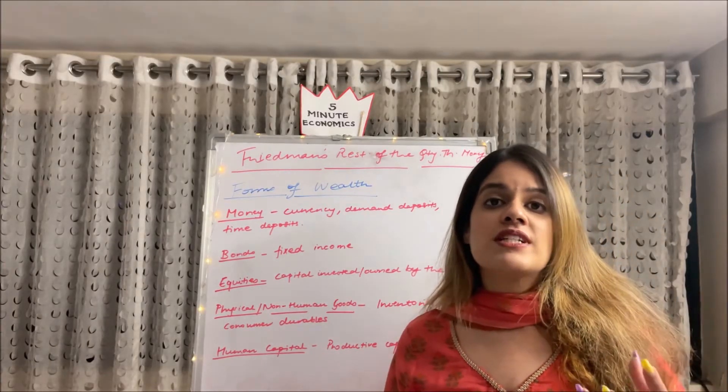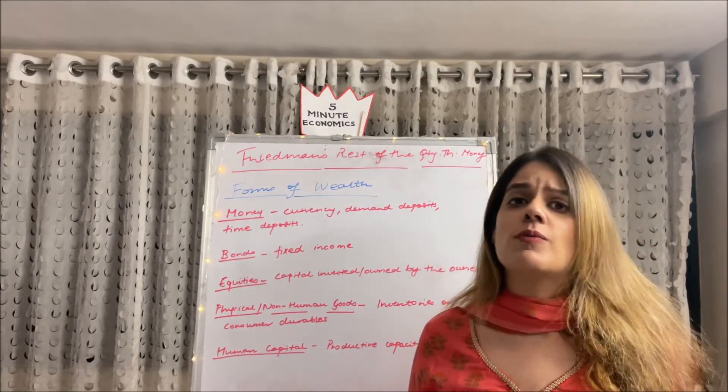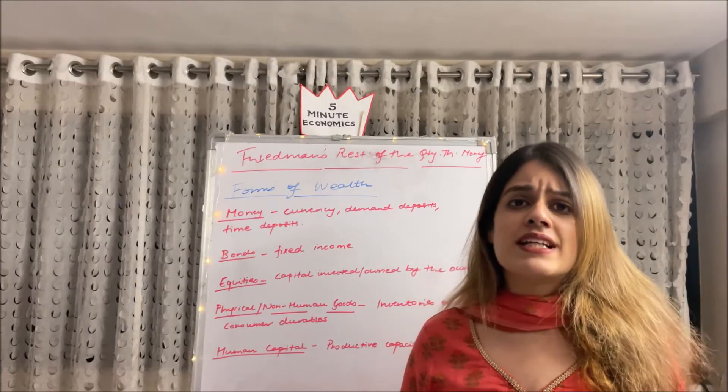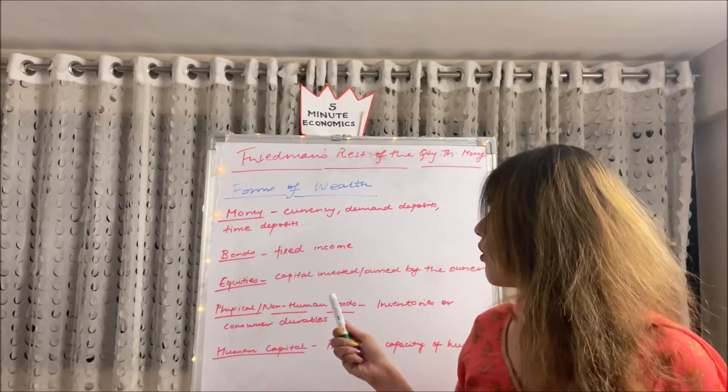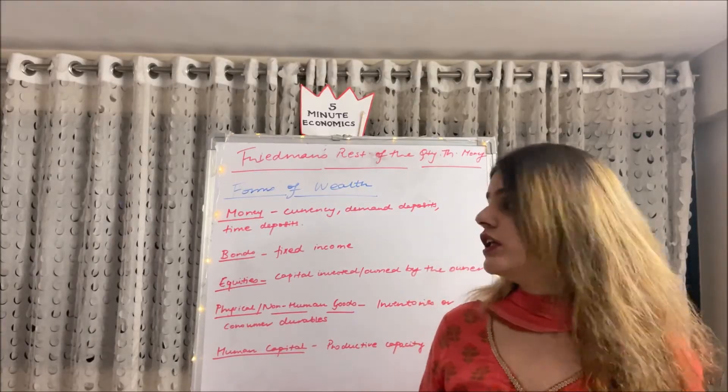Secondly bonds. We know bonds represent fixed kind of income. Bonds can be HDFC bonds, savings bonds, treasury bonds, several types of bonds. Thirdly equities. Equity is basically the capital or the amount invested by the owner of a firm, that is the equity.